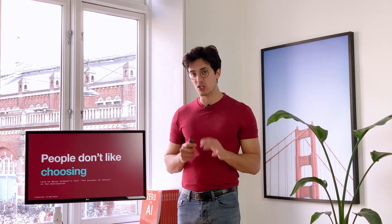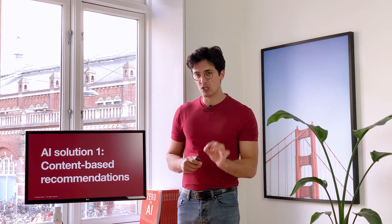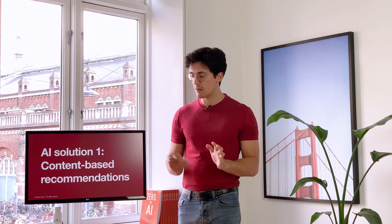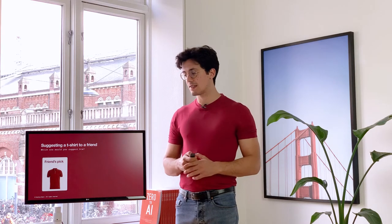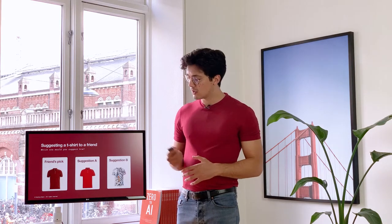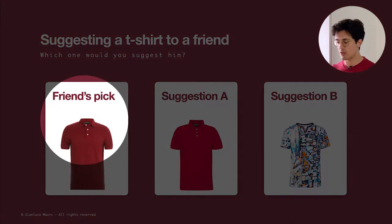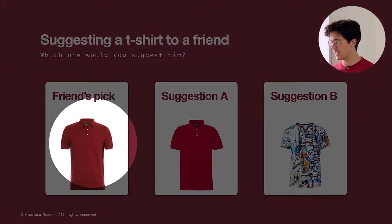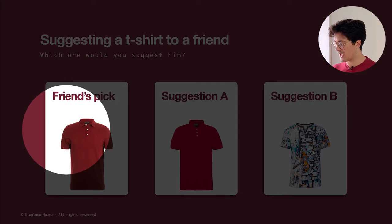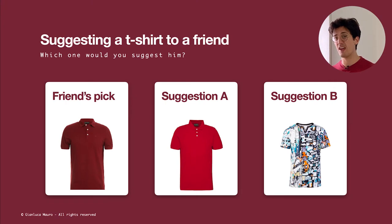The first way in which it can do it is called content-based recommendations. Let's try to get an intuition of what content-based recommendations mean. Let's suppose that your friend really likes this t-shirt. Which one would you suggest them to purchase — suggestion A or suggestion B? Well, probably you would pick suggestion A because it's more similar to what your friend already likes, while suggestion B is very weird and you probably would not suggest anything like that.